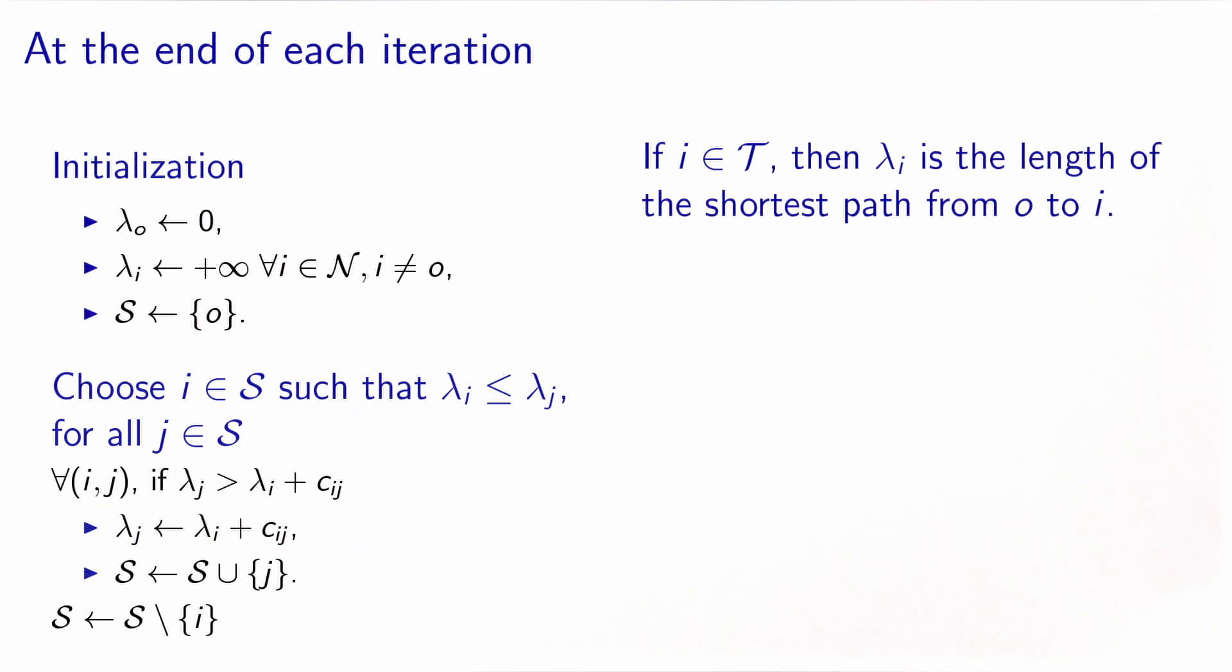And the last property justifies the name permanent labels for the set T. At the end of each iteration, if I belongs to T, then lambda I is the length of a shortest path from node O to node I. And this is due to the fact that the label is permanent. So because this value will stay the same until the end of the algorithm, and that we know from the shortest path algorithm that at the end, each label can be interpreted as the length of the shortest path. In this case, it's already the case at the current iteration, because the label will not be modified anymore.